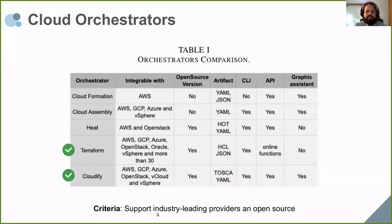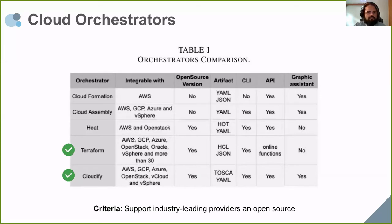In order to make an experiment with the solutions, we established criteria: the solution should have support for the industry providers and be open source. Attending to this criteria, we had only two solutions: Terraform and Cloudify. CloudFormation only supports AWS; CloudAssembly supports AWS, GCP, and Azure, which are the leaders, but it's not open source. Heat didn't support GCP and Azure. So we chose Terraform and Cloudify to take part in our experiment.